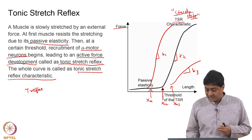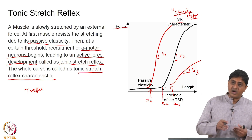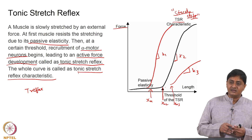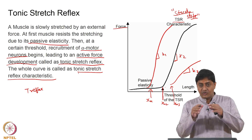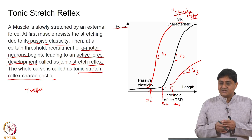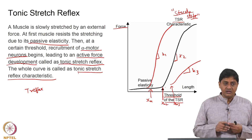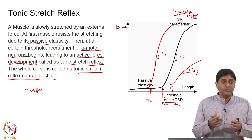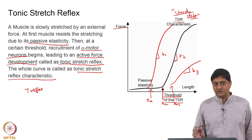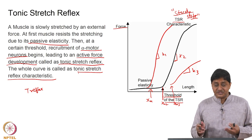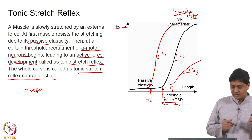The tonic stretch reflex threshold itself can be controlled. In other words, at what point the force will begin to develop is something that can be controlled by the central nervous system. There is a whole theory about how this threshold of the tonic stretch reflex alone can serve as a control parameter for movements. For now, it is sufficient to know that there can be multiple thresholds and multiple slopes — it is far more complicated than the monosynaptic and disynaptic reflex cases.